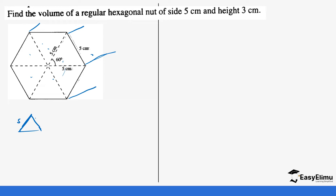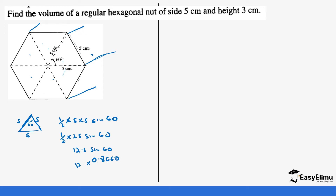As you can see, this is an equilateral triangle with all sides equal to 5 and an angle of 60 degrees. We use the formula: one-half times 5 times 5 times sine 60, which is the same as one-half times 25 times sine 60. Dividing 25 by 2 gives 12.5, so this is 12.5 times sine 60. Sine 60 from tables is 0.8660, so 12.5 times 0.8660 gives 108.25 centimeters squared.